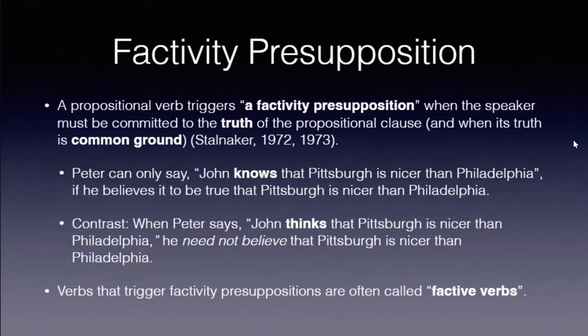The factivity presupposition means the speaker must be committed to the truth of the propositional complement. For example, Peter can only say 'John knows that Pittsburgh is nicer than Philadelphia' if Peter believes that Pittsburgh is actually nicer than Philadelphia. If he doesn't believe that, he would say 'John believes that Pittsburgh is nicer than Philadelphia.' So when Peter uses 'knows,' he's communicating his commitment to that fact. Verbs that trigger a factivity presupposition are called factive verbs.